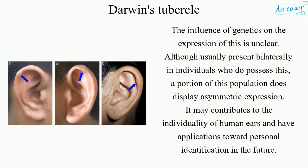The influence of genetics on the expression of this is unclear, although it is usually present bilaterally. In individuals who do possess this, a portion of this population does display asymmetric expression.